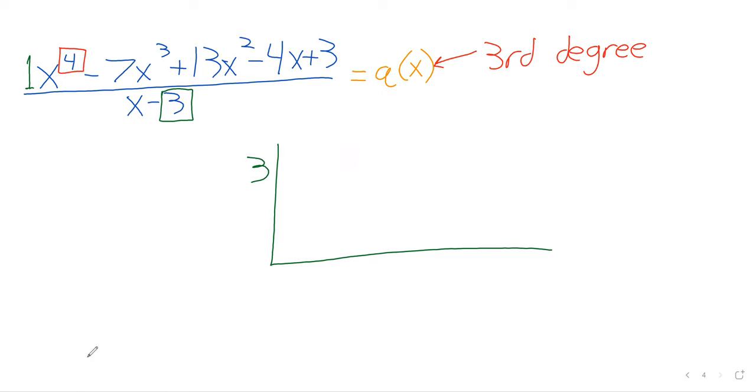So that's a one x to the fourth. That's a negative seven x cubed. That's a 13 x squared. That's a negative 4x. And that is a three.